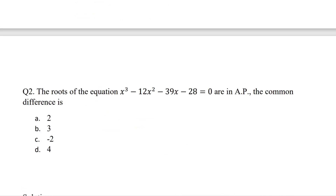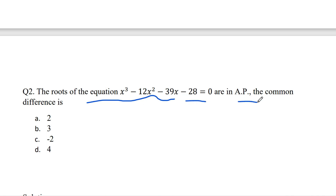The next problem: the roots of the equation x³ - 12x² - 39x - 28 = 0 are in arithmetic progression. You have to calculate the value of common difference d. The given choices are 2, 3, -2, and 4.